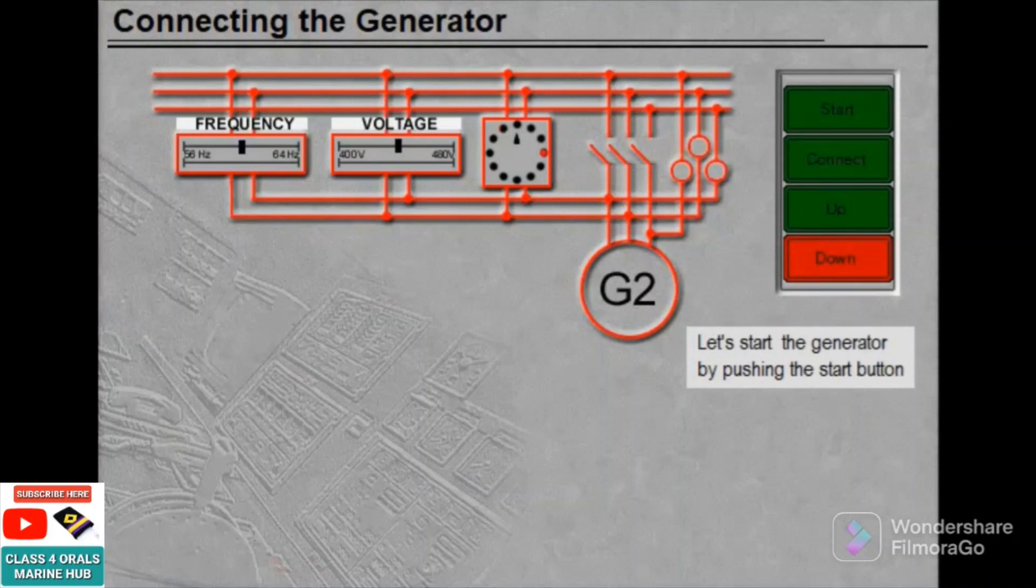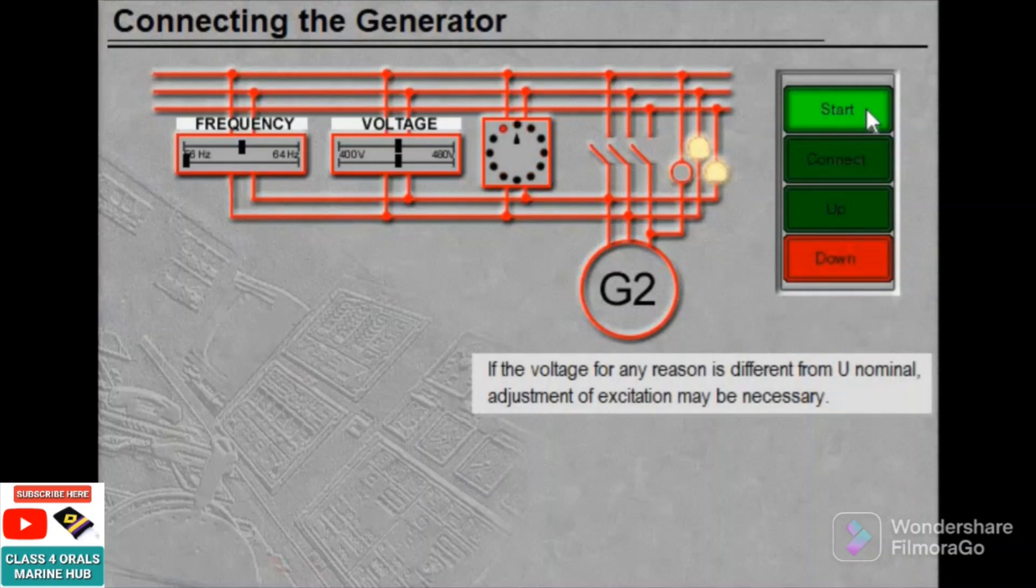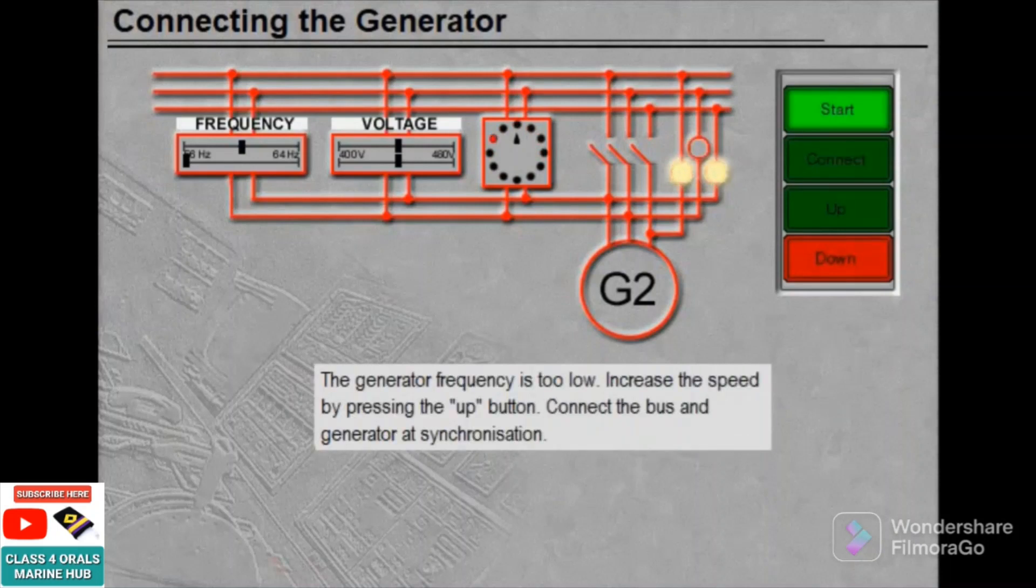Let's start the generator by pushing the start button. If the voltage for any reason is different from U nominal, adjustment of excitation may be necessary. The generator frequency is too low, increase the speed by pressing the up button. Connect the bus and generator at synchronization.